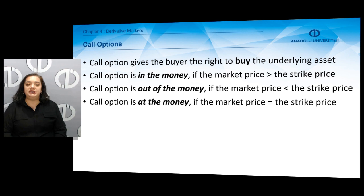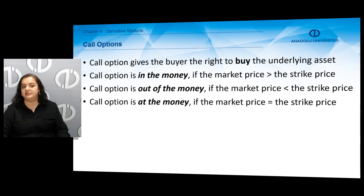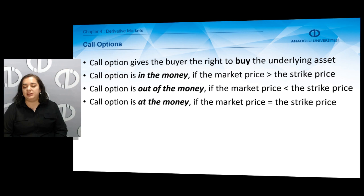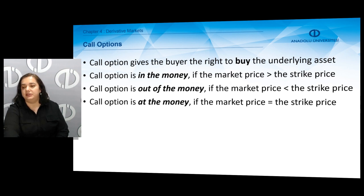A call option gives the buyer the right to buy the underlying asset at a predetermined price at some future date. A call option is said to be in the money if the market price is above the strike price — meaning it will be exercised. A call option is out of the money if the market price is lower than the strike price, so it will not be exercised. A call option is at the money if the market price equals the strike price, so the long party is indifferent between exercising or not.